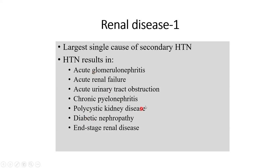All these sorts of kidney problems — the famous kidney diseases like acute renal failure, obstruction by a stone, polycystic kidney disease, and diabetes — can cause secondary hypertension. Diabetes causes kidney disease which then causes hypertension. You can see the enormous cascade: being diabetic leads to kidney disease, which leads to hypertension.